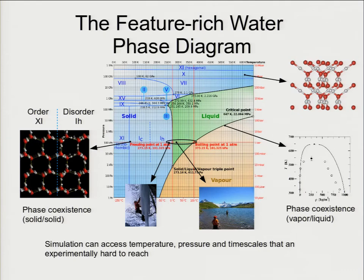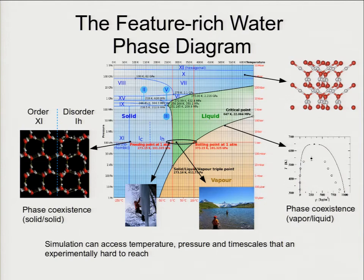The first example I've taken, which is application-driven, is water — focusing on the phase diagram. Water has a complex phase diagram with 15 different phases known experimentally. I care about what happens when you go down in temperature: from ordinary ice, ice 1H, to a different phase, ice 11. The difference between these two is that ice 1H is a proton-disordered phase and ice 11 is a proton-ordered phase, while the oxygen arrangement is the same — it's just the hydrogens that can be disordered or not.